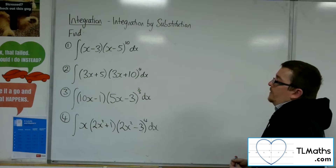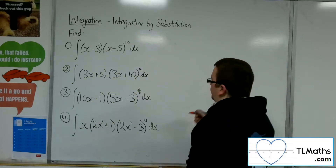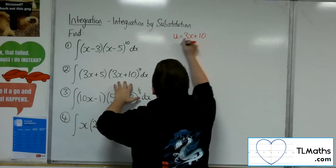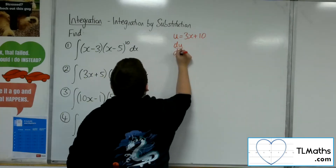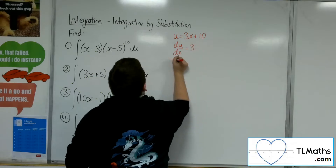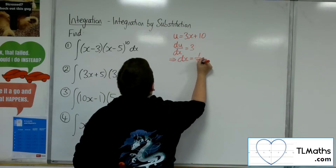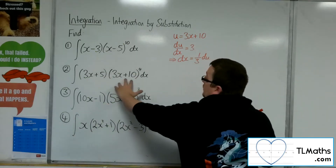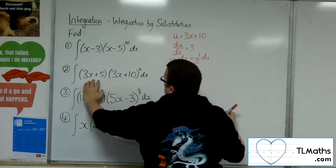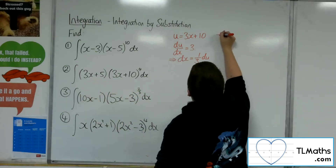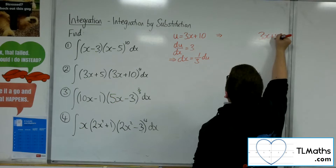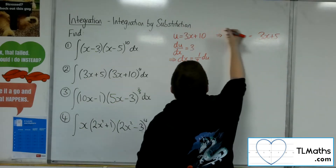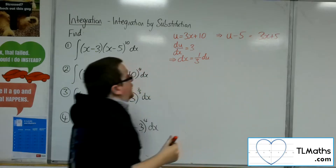Number 2: the integral of 3x plus 5 times 3x plus 10 to the 4. The u will be 3x plus 10, so du by dx will be 3, and dx will be one third times du. Now we've got a replacement for 3x plus 10 and a replacement for dx. We need a replacement for 3x plus 5. In order to get 3x plus 5, I would have to subtract 5 from that side, so that must be u minus 5.